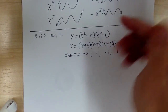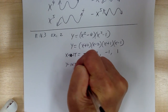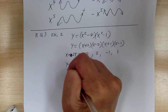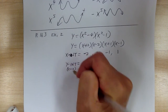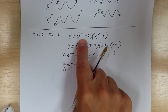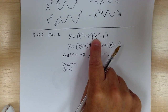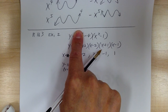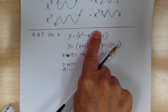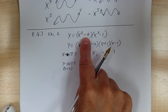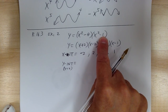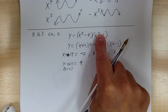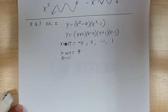You also want the y-intercept, which is when x equals 0. Using the original equation, set x = 0: the x² term disappears giving -4, and the second factor gives -1. So -4 times -1 gives you positive 4. The y-intercept is 4. These are your critical points.